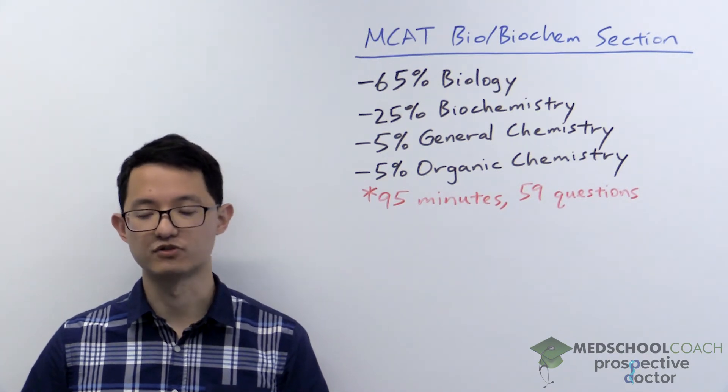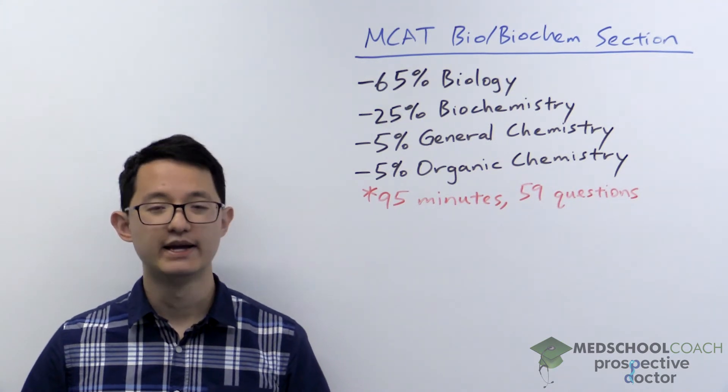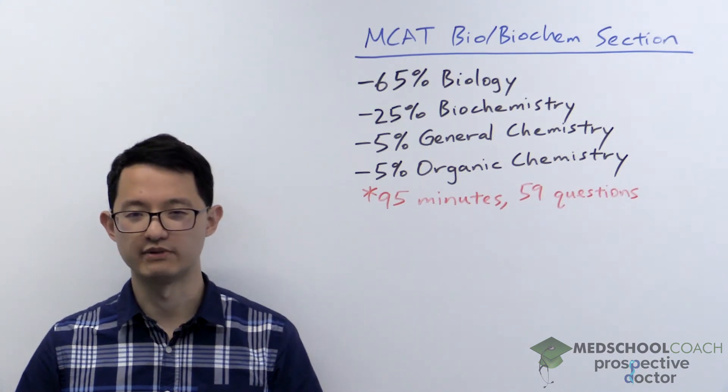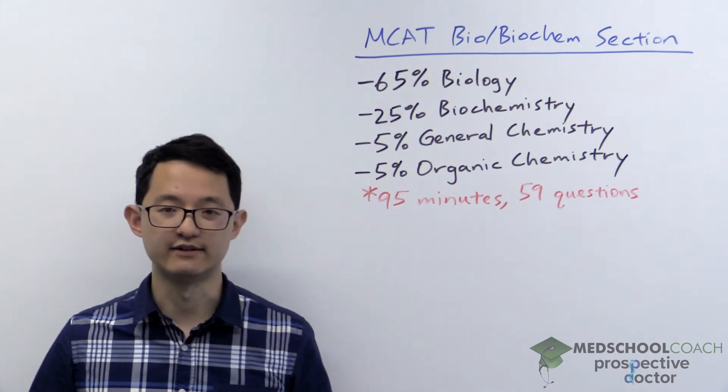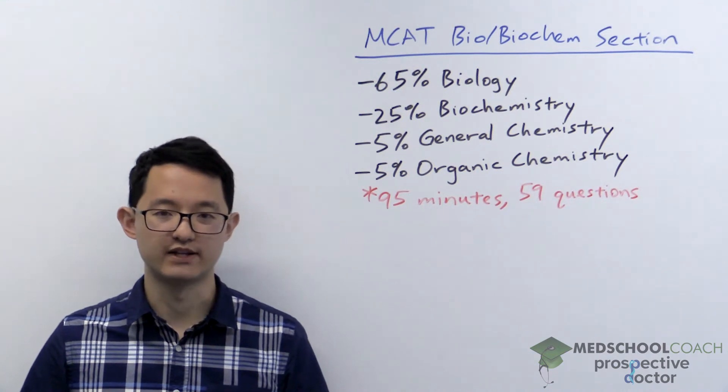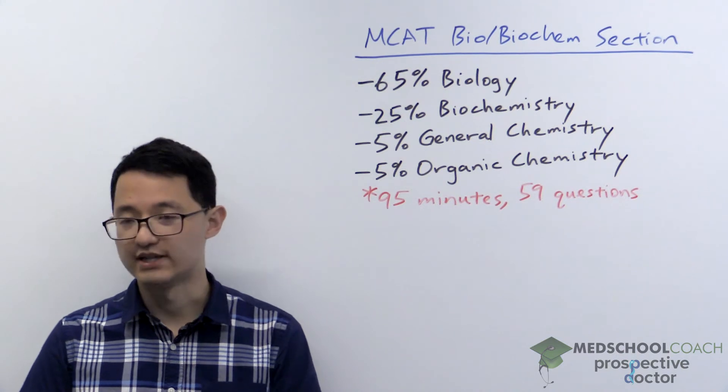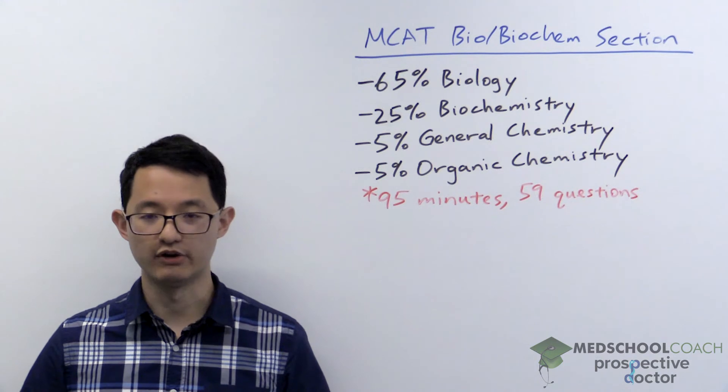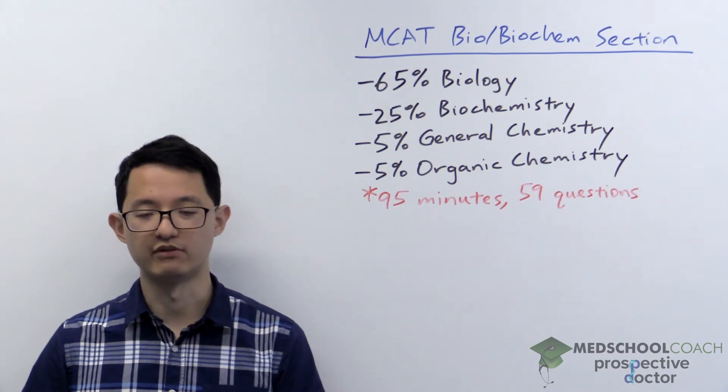When you're applying for medical school it's true that you're only required to take one year of general biology with lab. However, the unfortunate news is that one year of general biology with lab usually will not cover these topics to the level of detail that you need to know for the MCAT. So if you can, try to take some additional advanced biology courses in physiology, genetics, cell biology, microbiology, really any advanced biology course will help. It's not required but will definitely help with the bio biochem section.